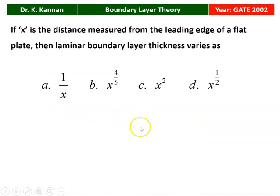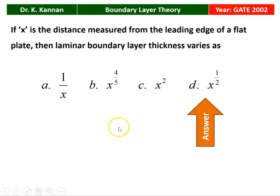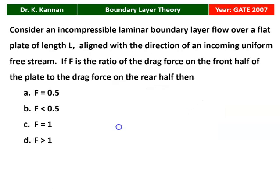The next question from the 2002 question paper: If x is the distance measured from the leading edge of a flat plate, then the laminar boundary layer thickness varies as (A) 1/x, (B) x to the power 4/5, (C) x squared, or (D) x to the power 1/2 (square root of x). The correct answer is x to the power 1/2 — the boundary layer thickness varies with respect to the square root of x.